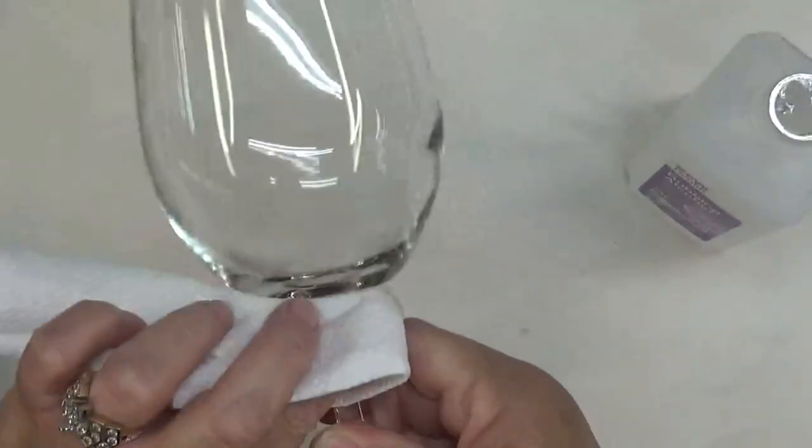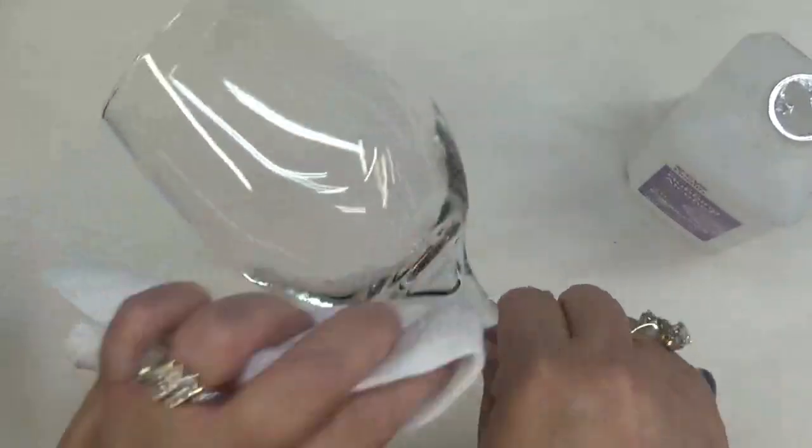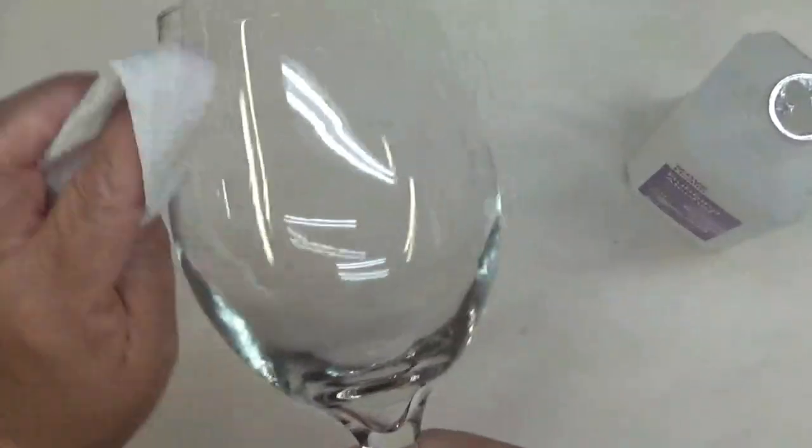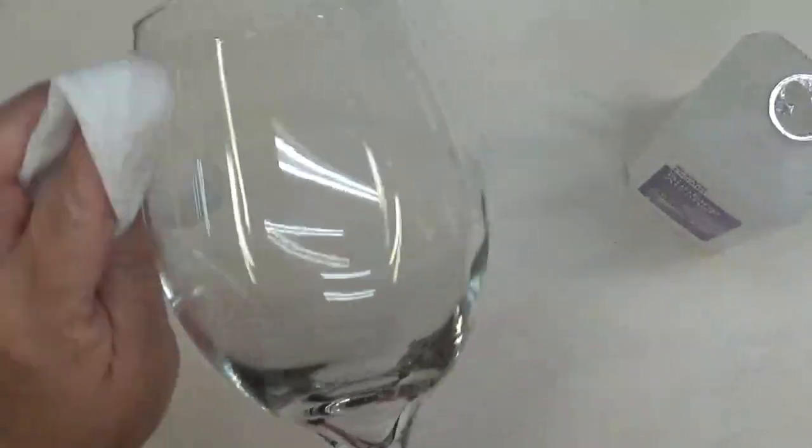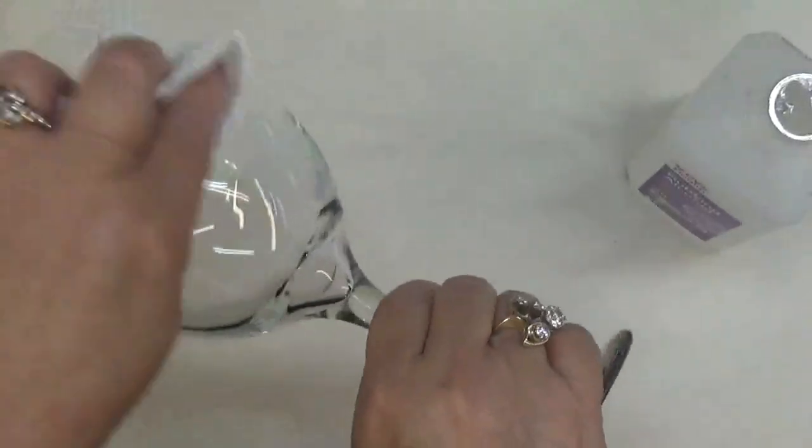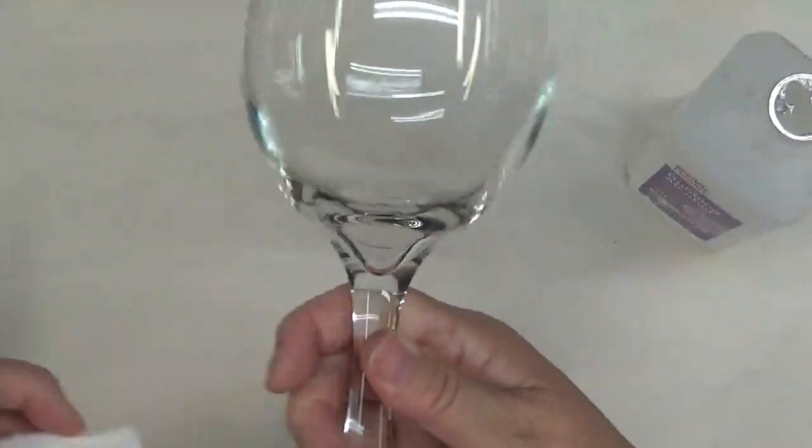Again, just a very quick easy tip—this is all you have to do. Just wipe it off. If you've ever dealt with rubbing alcohol, it dries very quickly.